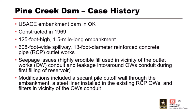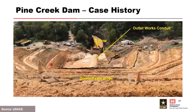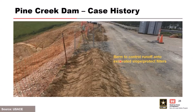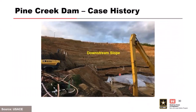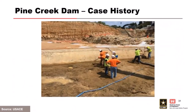This is the excavation at Pine Creek Dam - here's the outlet pipe, we're looking downstream. They put a berm right adjacent to the dam crest so that any overland flow would be prevented from coming down the slope, because they were placing sand as a collar around the conduit. They also benched the slope to try to prevent higher velocities from carrying material down into the excavation and contaminating their sand. They also put silt fence on those benches to try to retain anything that was going to move. Even with all that, they had a storm event and it took a lot of hand work to clean it all up.